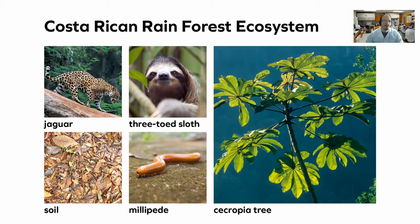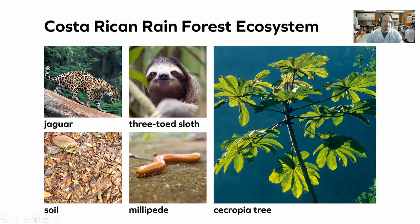A lot of Costa Rica is a rainforest ecosystem. Some of the types of organisms that live there include jaguars, the three-toed sloth, lots of small creatures like insects and millipedes, and a special type of tree called the cecropia tree. The soil isn't exactly alive, but it contains a lot of living things and is definitely going to be important for our ecosystem. How do you think these different things might interact with each other?